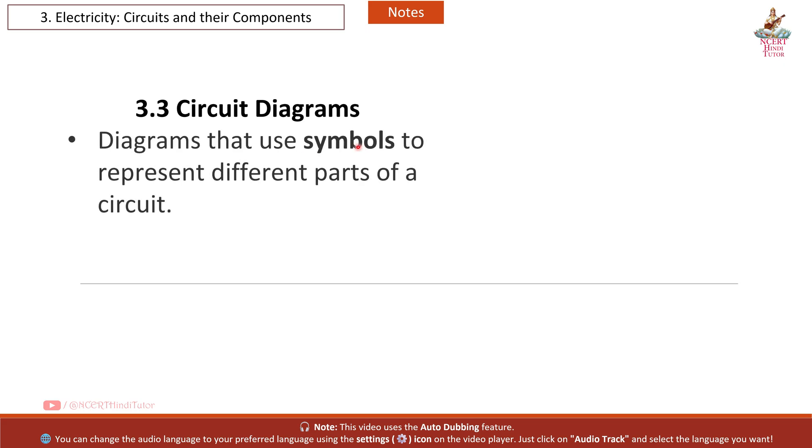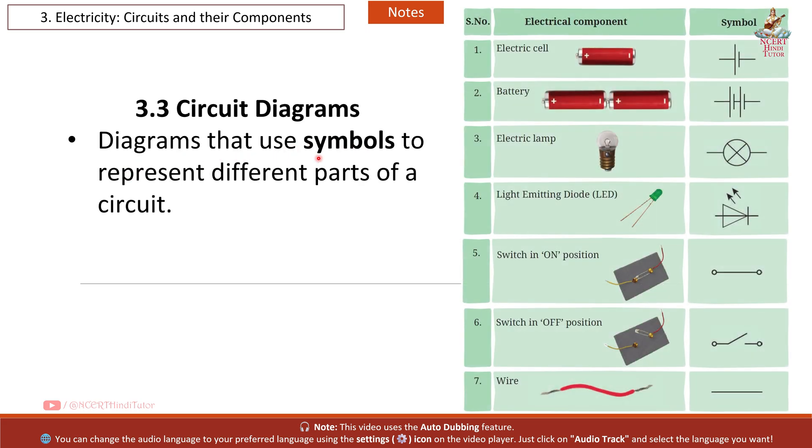3.3 Circuit Diagrams. Diagrams that use symbols to represent different parts of a circuit. First, electric cell - we use this symbol. Second, battery - its symbol. Next, electric lamp - its symbol. Fourth, light emitting diode (LED) - its symbol.